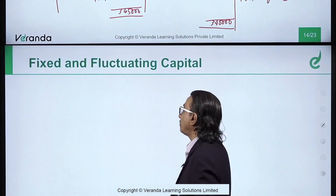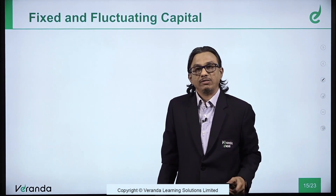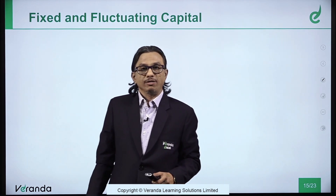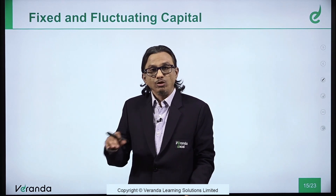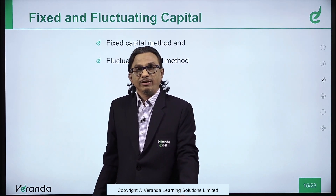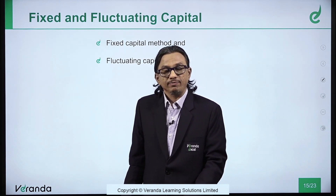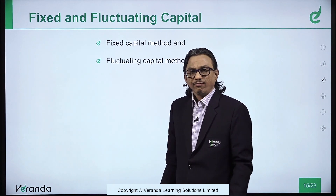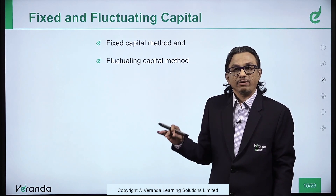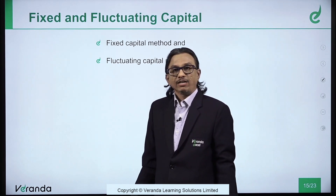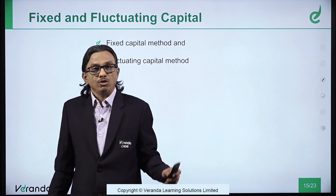Now we will learn how to prepare the capital accounts of the partners. In a partnership, capital accounts can be prepared by two different methods: fixed capital method and fluctuating capital method. Which method should be followed? The choice is left with the partners. They can follow either fixed capital method or fluctuating capital method.